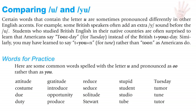More words spelled with U pronounced as OO: student, tube, Tuesday, tumor, tune, Tudor.